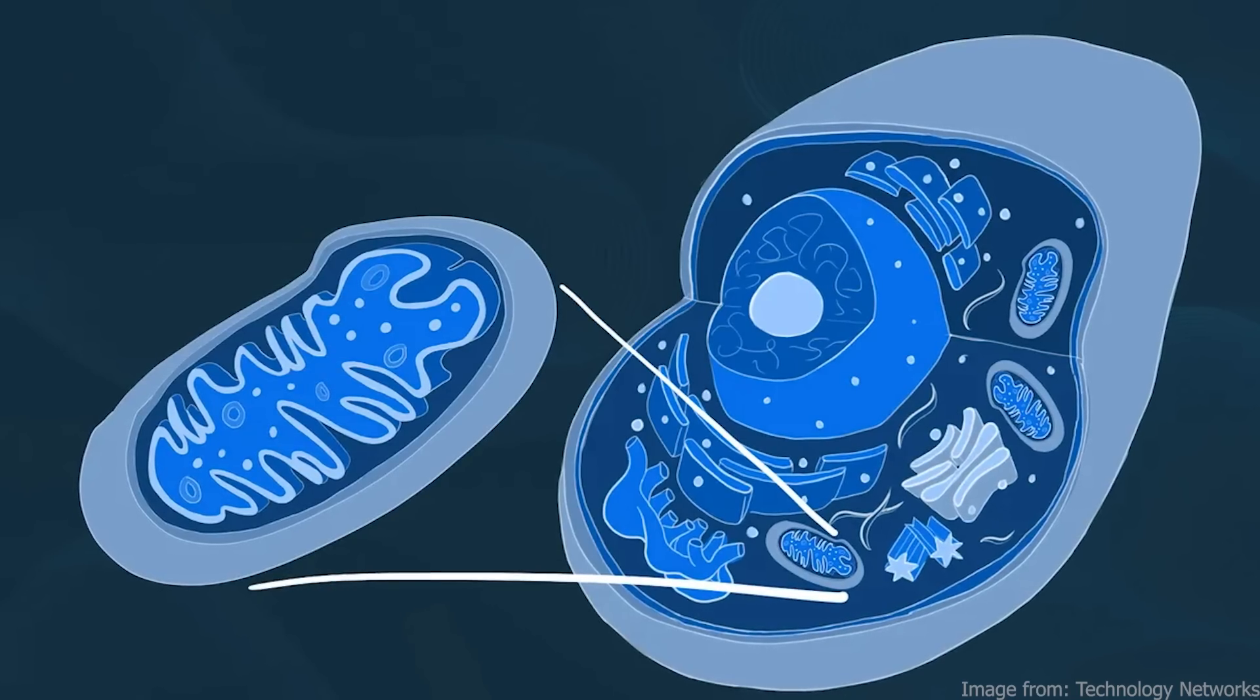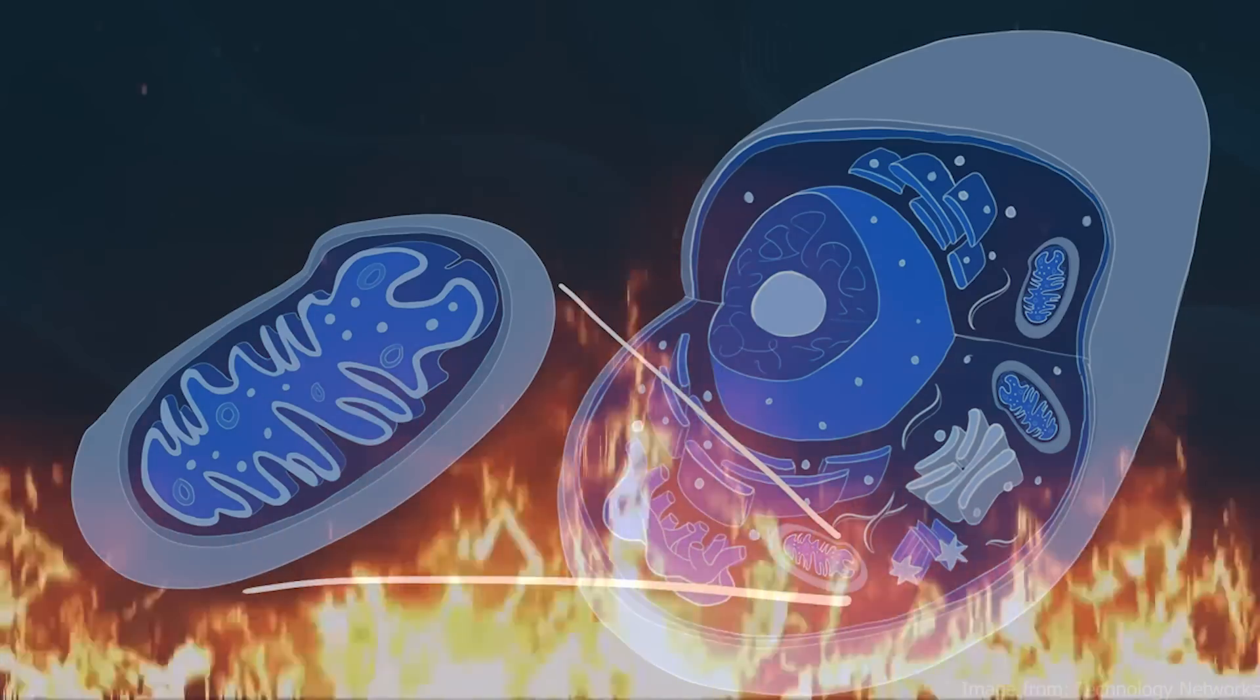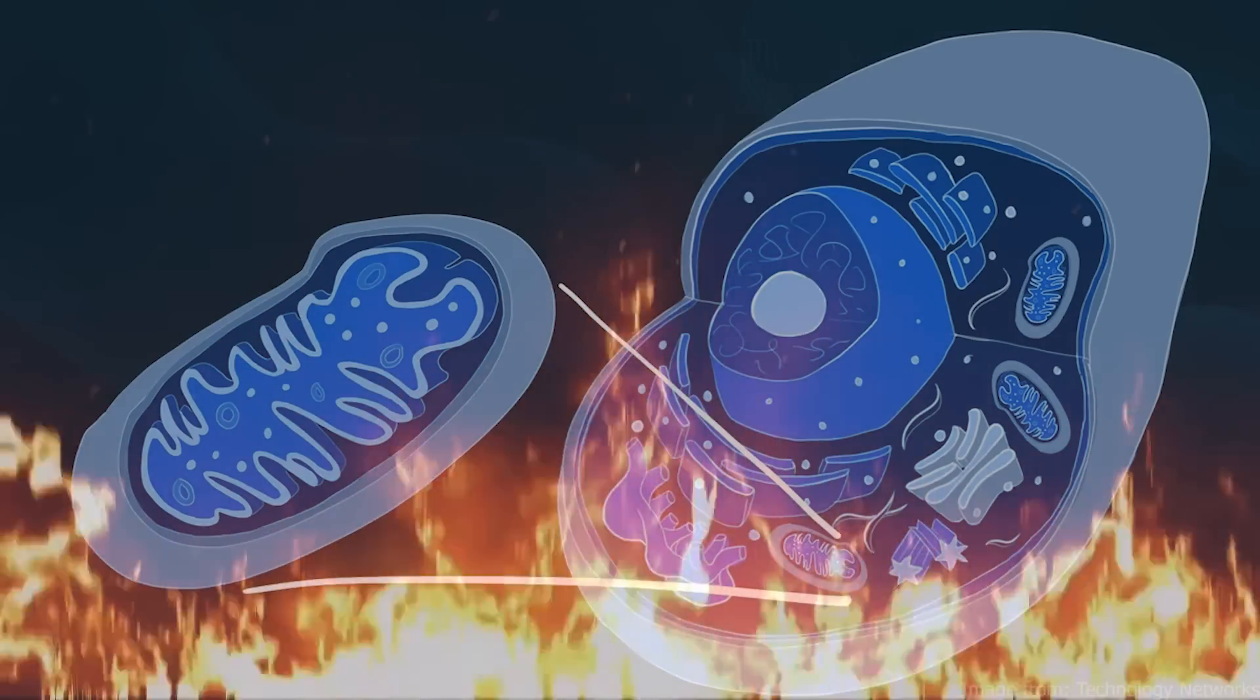Mitochondrial uncouplers increase mitochondrial respiration, meaning it forces you to start burning more fuel purely for heat, and so increases your body temperature.